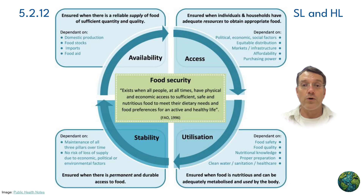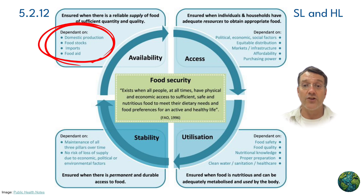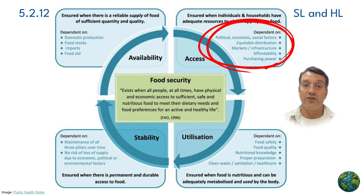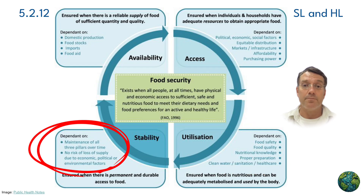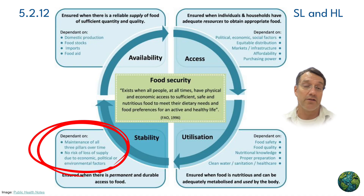Food security depends on four interconnected pillars: availability, access, utilization, and stability. Availability depends on domestic production, food stocks, imports, and food aid. Access depends on political, economic, and social factors, including equitable distribution and purchasing power. Utilization requires food safety, food quality, and proper preparation along with clean water and healthcare. Stability means maintaining all three other pillars over time without the risk of loss due to economic, political, or environmental factors.